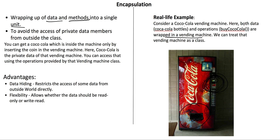Now, how do we relate this? The second point is: to avoid the access of private data members from the outside world. In the Coca-Cola vending machine, the Coca-Cola company's private data — such as the count of 100 Coca-Cola bottles inside — is kept private.